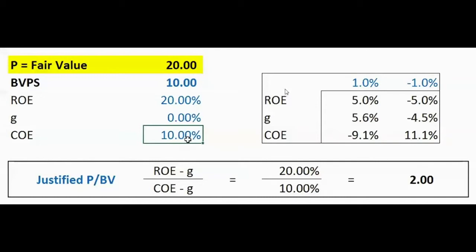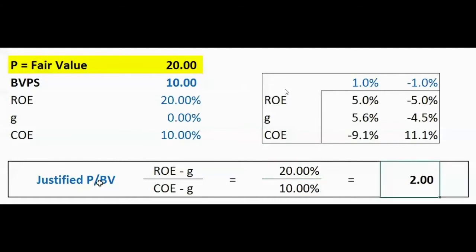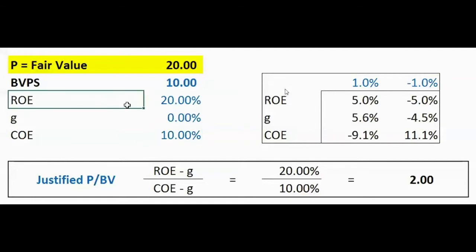ROE minus G is 20% minus 0%, giving a numerator of 20%. Divided by cost of equity minus G, which is 10% minus 0%, equals 10%. So 20% divided by 10% gives a multiple of 2 times. With a book value per share of 10, you multiply the two together: fair value equals 20 — whether that's dollars, pounds, or reals.